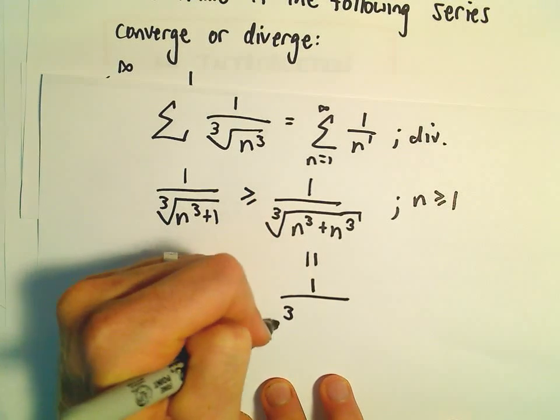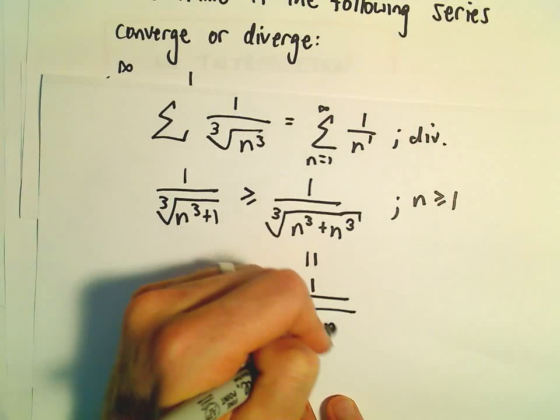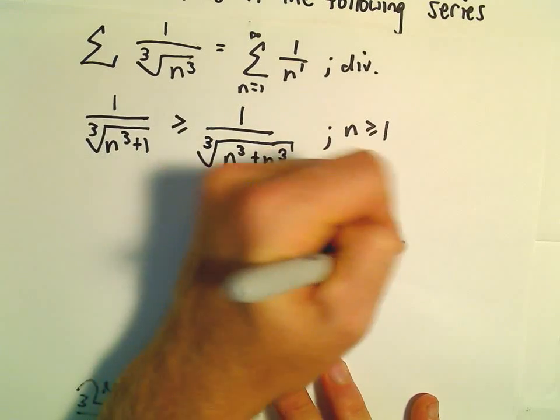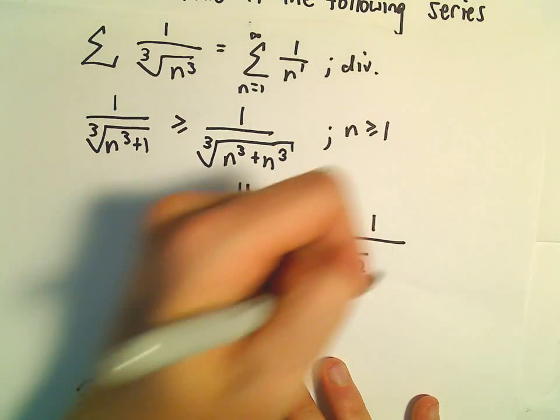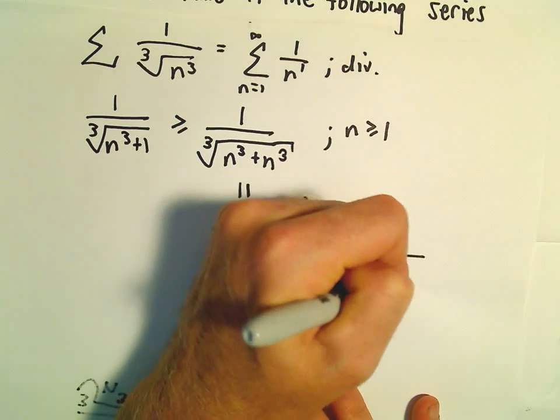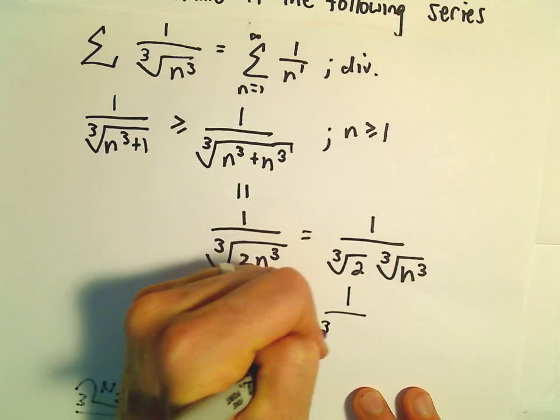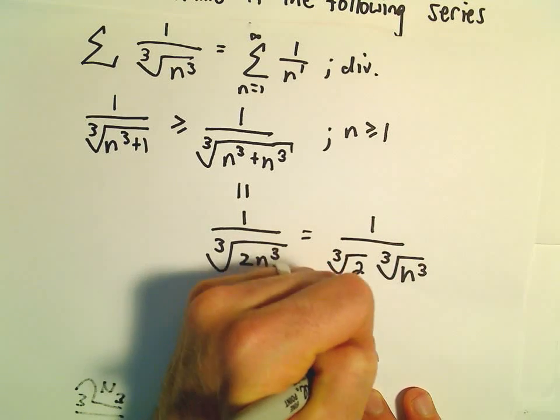This is the same thing as 1 over the cube root of 2n cubed. But we can just break that up. That's 1 over the cube root of 2 times the cube root of n cubed. And that's going to leave us with 1 over the cube root of 2 times n.